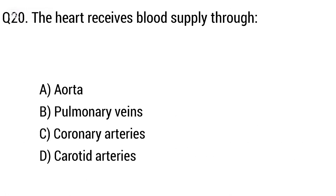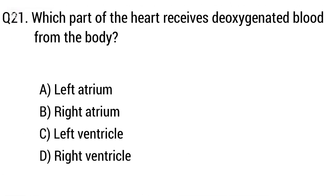Question 20: The heart receives blood supply through option A: aorta, B: pulmonary vein, C: coronary arteries, D: carotid arteries. The right answer is option C, coronary arteries.